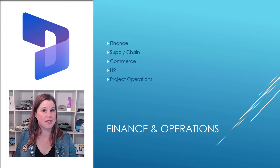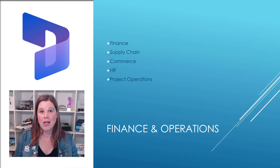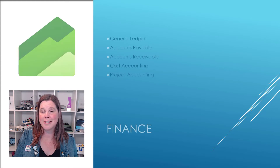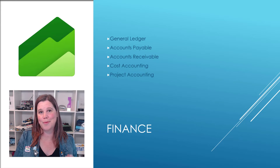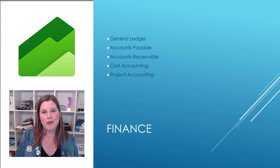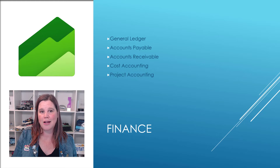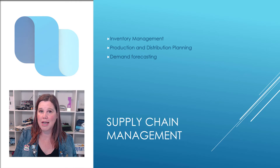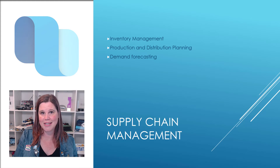On the ERP side — finance and operations — there are applications to manage the back office: finance, supply chain, commerce, e-commerce, human resources, and project operations. The finance system is a full enterprise-capable solution covering everything end-to-end: general ledger, accounts payable, accounts receivable, cost accounting, and project accounting. The supply chain management capability handles inventory, production, distribution planning, and demand forecasting.